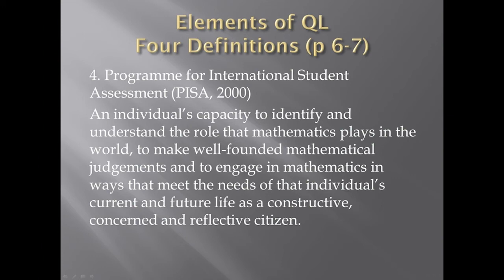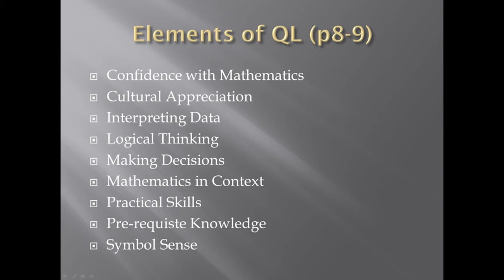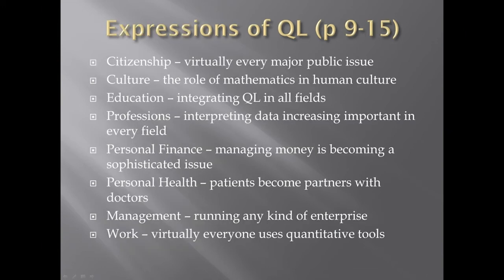Here are some elements of quantitative literacy found on pages eight and nine. I've listed the elements here and I encourage you to read the definitions — there are bullet points. You can go look for yourself and find these elements of quantitative literacy; it's more than algebra. Expressions of quantitative literacy on pages nine through fifteen include bullet-pointed examples of how we use quantitative literacy in citizenship. Virtually every major public issue — health care, social programs, voting, political boundaries, school boundaries — all of these topics necessitate being able to reason quantitatively.